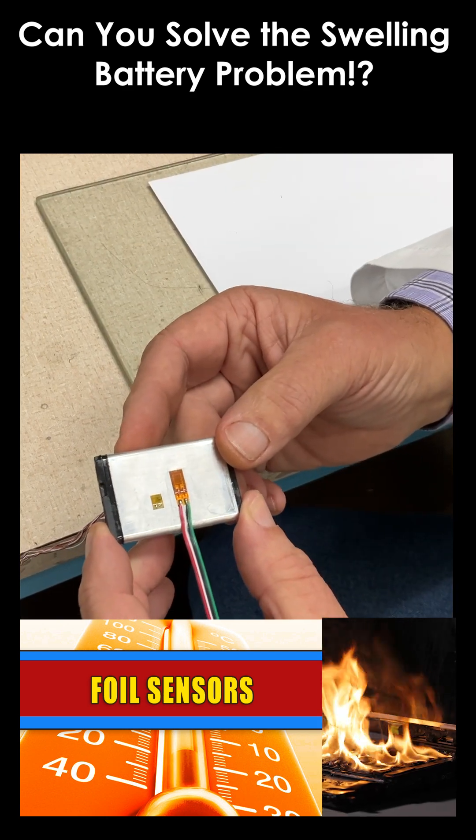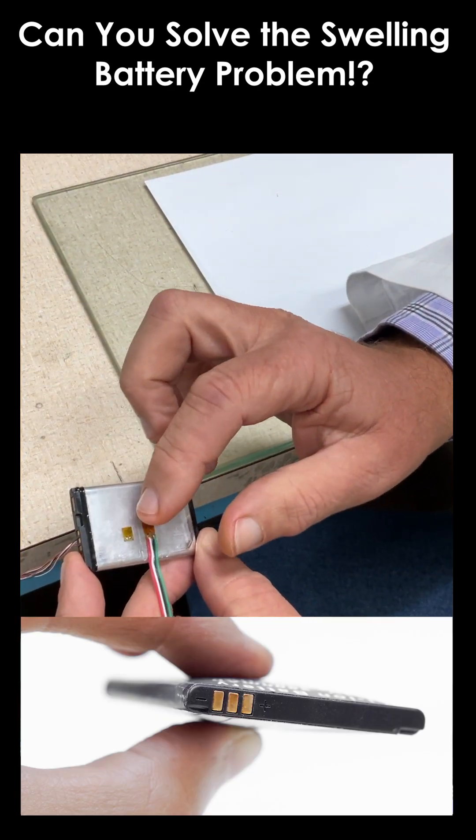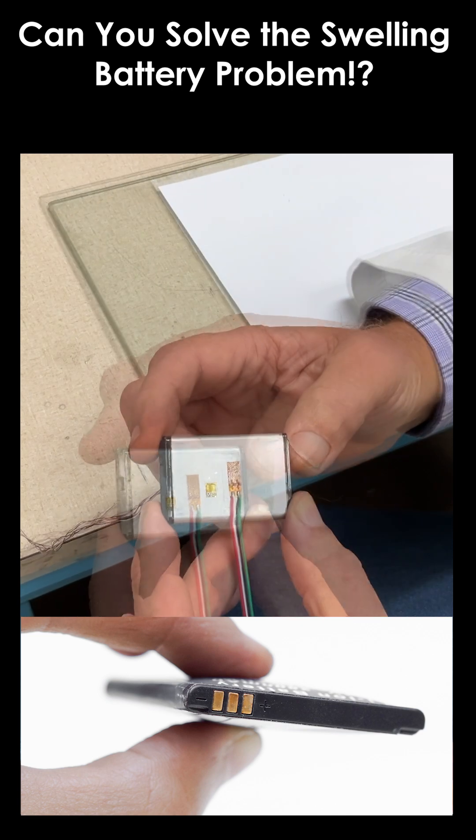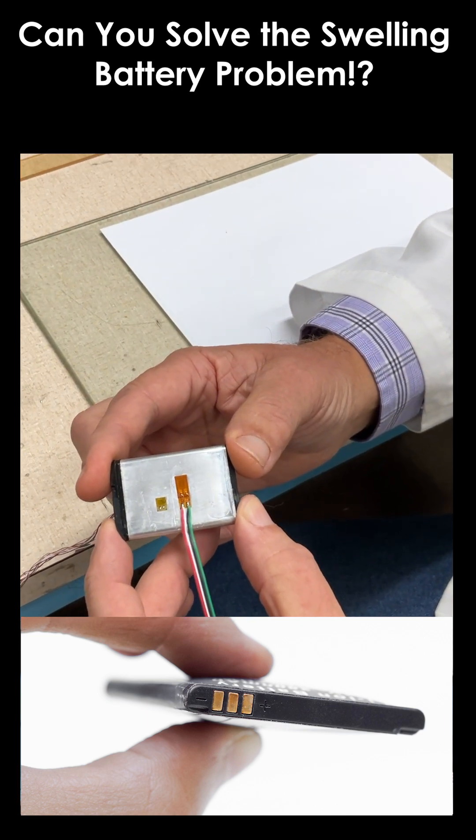Well, as lithium batteries age, they tend to swell. So that swelling results in a strain in the aluminum, which the strain gauge can measure. It's another indication that the battery may require some maintenance or some attention.